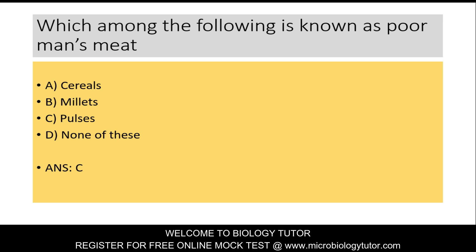Next question: Which among the following is known as poor man's meat? A. Cereals, B. Millets, C. Pulses, D. None of these. Answer is C: Pulses. Pulses are known as poor man's meat.